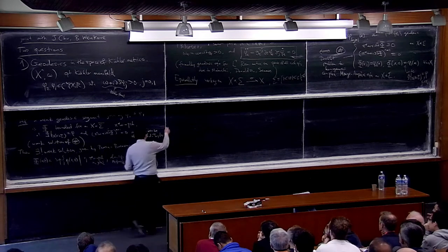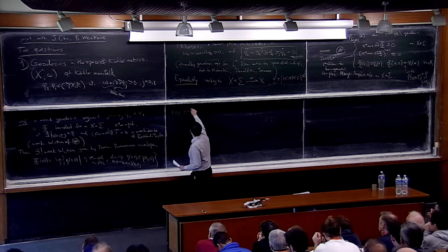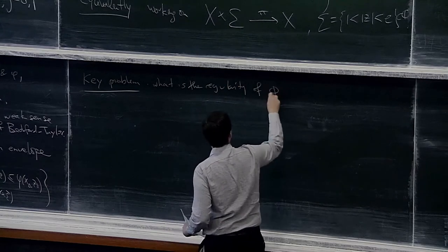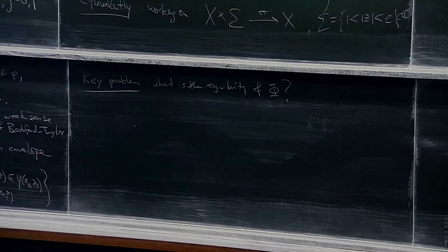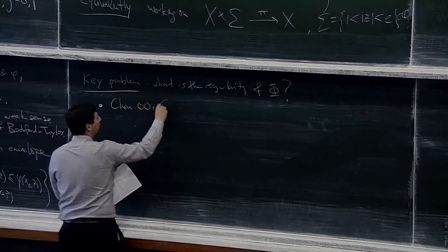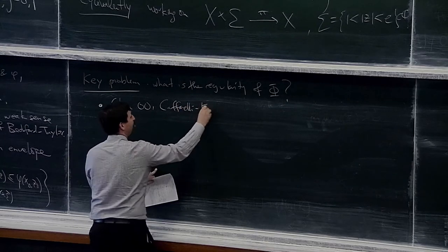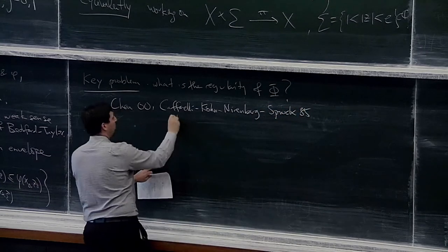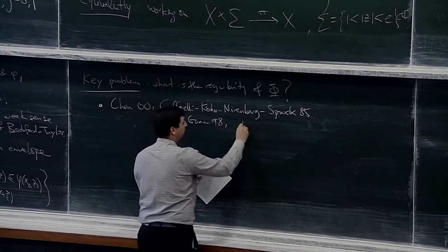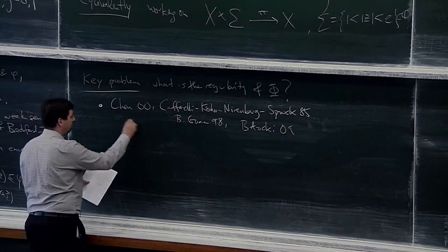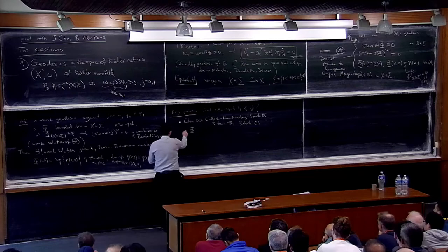Of course, it's not completely satisfactory since it's given by a big supremum and not easy to work with directly. The key problem is: what is the regularity of this phi? The story is like this: the first result was due to Chen in 2000, building upon earlier work of Caffarelli-Kohn-Nirenberg-Spruck in 1985, Bochner in 1998-99, and later some addendum by Błocki.